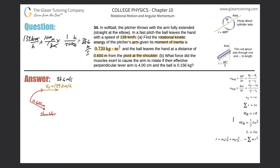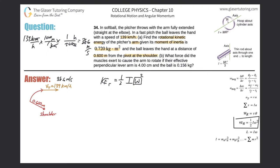We need to find the rotational kinetic energy of the pitcher's arm specifically. The formula is: KE_rotation of the arm equals one half times the moment of inertia of the arm times the angular velocity of the arm squared. We know I = 0.72. To find angular velocity from tangential velocity, we use v_t = r·ω, which gives ω = v_t / r.